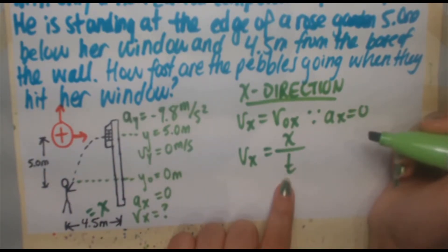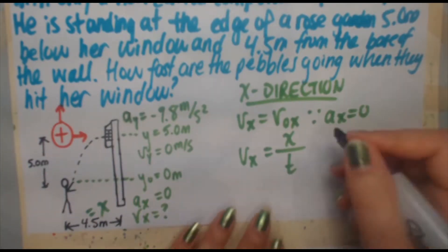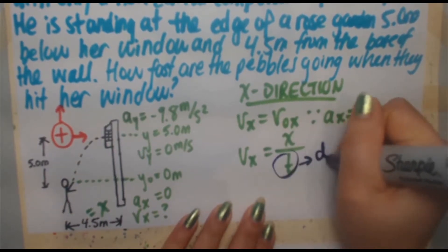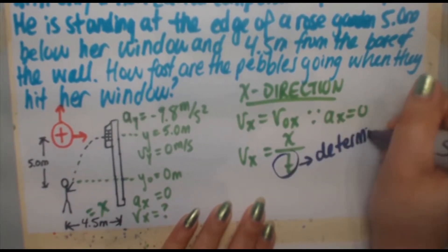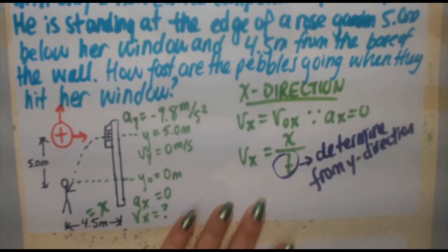Hopefully you're seeing some symmetry with the other projectile motion problems. You're always usually left with time unknown in one direction, and you find it from the other direction. That is the only thing common when you're doing these component problems. So t, we're going to determine from y direction.